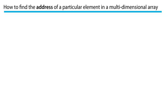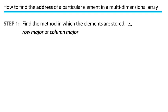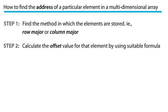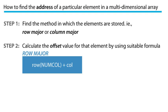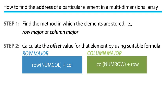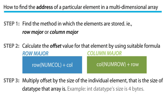Let's try to find the address of a particular element in a multidimensional array. Step 1: find the method in which the elements are stored — either row major or column major. Step 2: calculate the offset value for that element using the suitable formula. Step 3: multiply the offset by the size of the data type. Step 4: add the base address to the result from step 3.